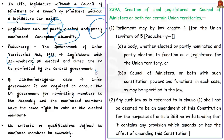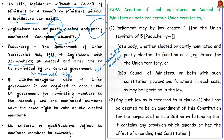The question arises: will a nominated house promote representative democracy? In Puducherry, the issue of nomination of members to the assembly raised huge controversy. The Government of Union Territories Act of 1963 provides for a 33-member house for Puducherry, of whom 3 are to be nominated by the central government. When the union government nominated 3 members without consulting the state government, it was challenged in court. The Supreme Court in K. Lakshmi Narayanan case of 2019 held that the union government is not required to consult the union territory government for nominating members, and nominated members have the same right to vote as elected members.